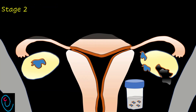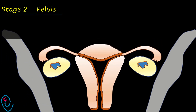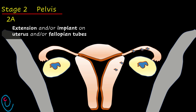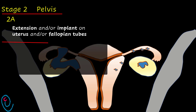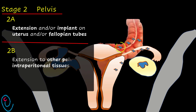Stage 2 involves tumor spread inside the pelvis. In 2a, there is extension and/or implants on the uterus and/or fallopian tubes. In 2b, there is extension to other pelvic intraperitoneal tissues.